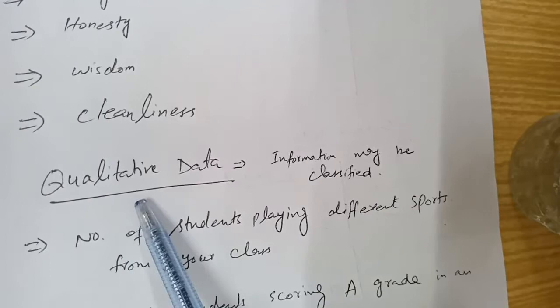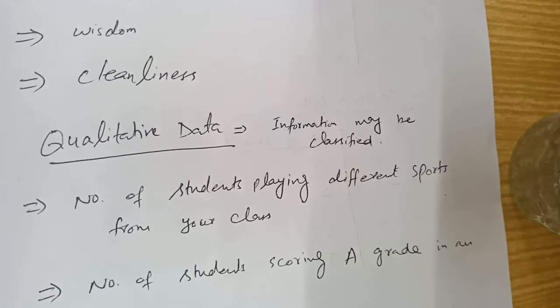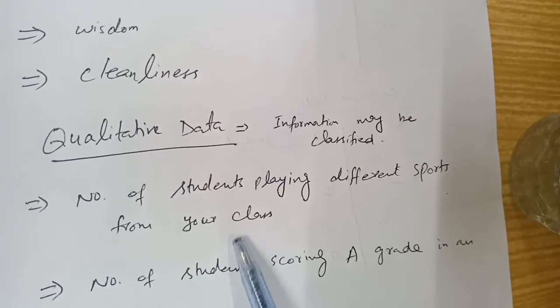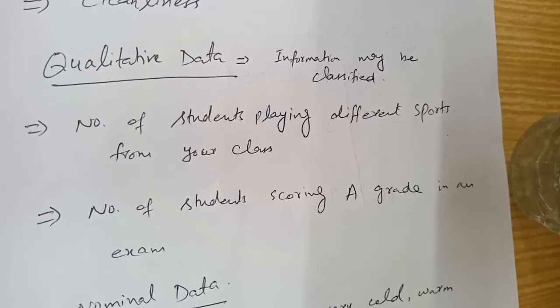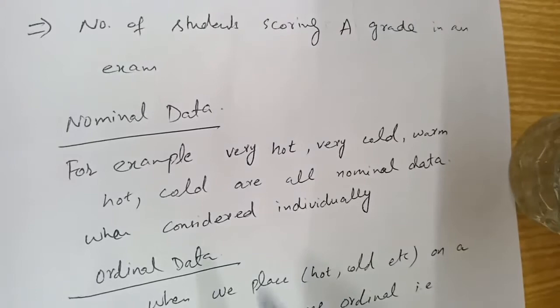For quantitative data, examples include: the number of students playing different sports in your class — here we are dealing with numbers — and the number of students scoring an A grade in an exam. When we are talking about numbers, this is called quantitative data.